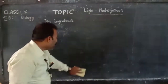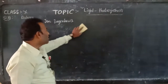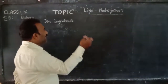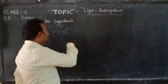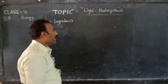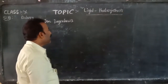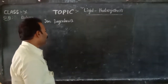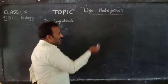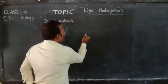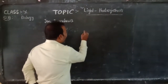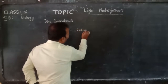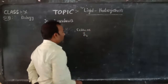Photosynthesis also requires energy. The energy required for photosynthesis comes from light — that is, sunlight. During the process of photosynthesis, light energy is utilized and converted as chemical or bond energy. This bond energy is stored in glucose (C6H12O6).